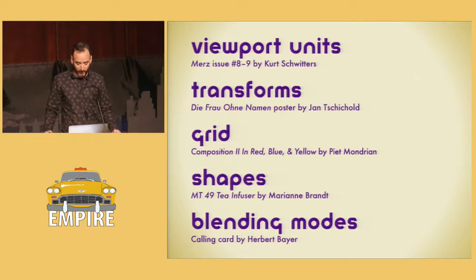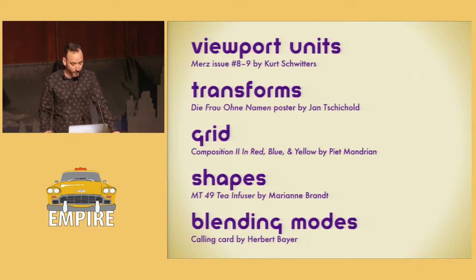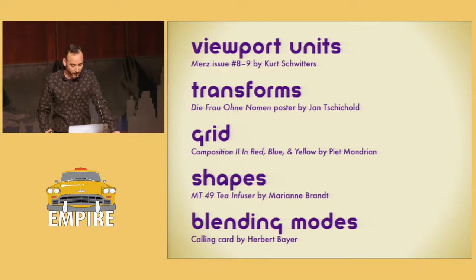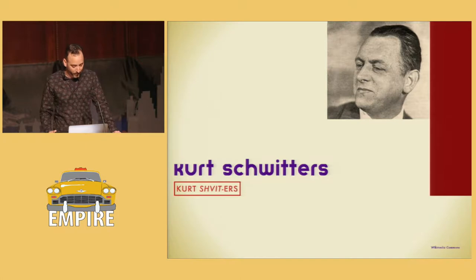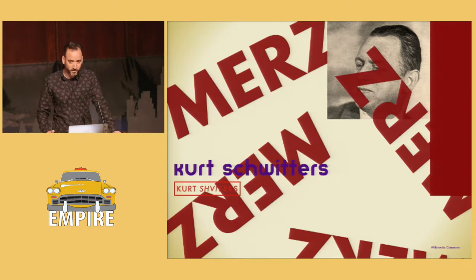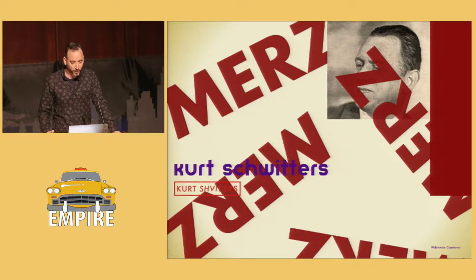So there are five topics that I want to explore today: viewport units, transforms, grid, shapes, and blending modes. And I'm going to apply these to various works by artists of the avant-garde. So starting out, let's talk about Kurt Schwitters. He was a Dada artist who used found objects to make these psychological collages, which he called merts, in order to reject the reason and logic of the bourgeois capitalist society and make sense of the world around him.